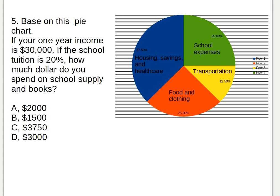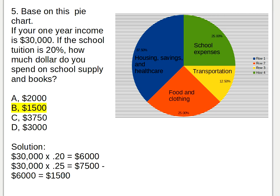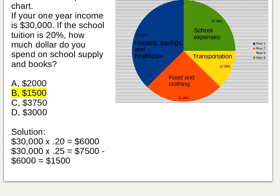The fifth question: based on this pie chart, if your one-year income is thirty thousand dollars and school tuition is twenty percent, how much do you spend on school supplies and books? School expenses total twenty-five percent. The solution is: thirty thousand times 20% equals six thousand dollars, and thirty thousand times 25% equals seven thousand five hundred dollars. Seven thousand five hundred minus six thousand equals one thousand five hundred dollars.